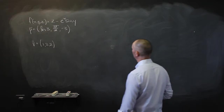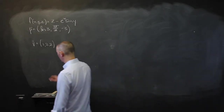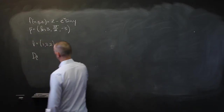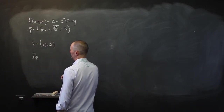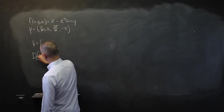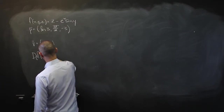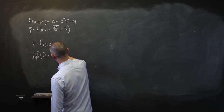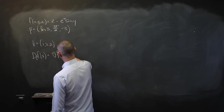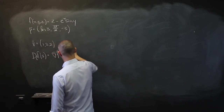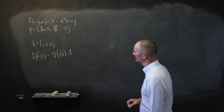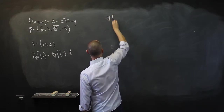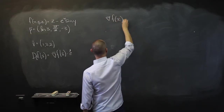Let's remind ourselves of how we're going to do that. The derivative in some unit vector direction of f of the vector x is the gradient of f at x dot-producted with that unit vector. So first, let's get the gradient of f.